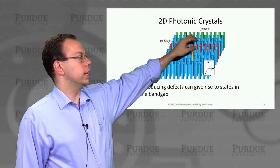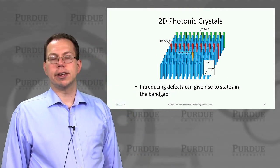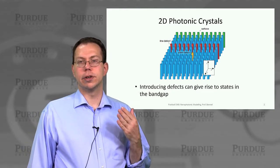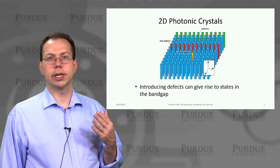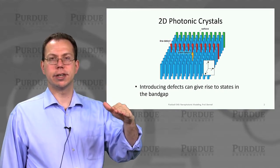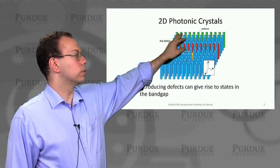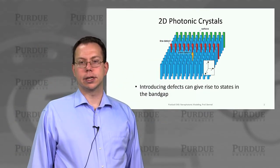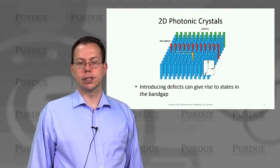Finally, you can have surface state defects. Surface state defects could arise from one of two mechanisms: either a non-obvious surface termination where you basically cut it off in the middle of the period, or you actually change the properties of the rods, either by increasing the refractive index or by changing their radius.